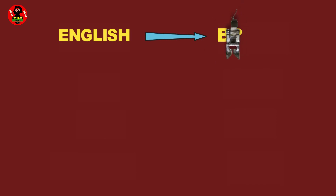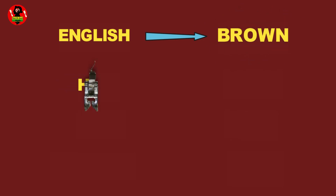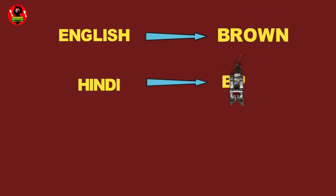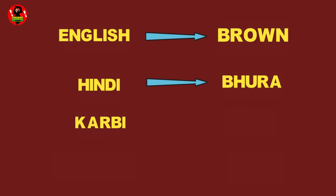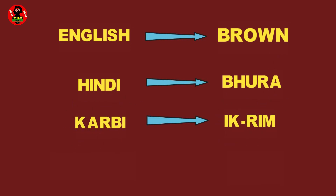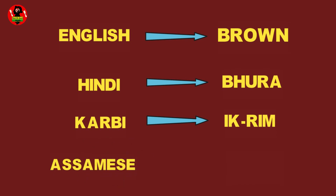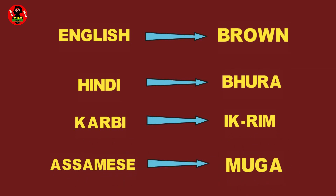English: Brown. Hindi: Bhura. Karbi: Igrim. Assamese: Muga.